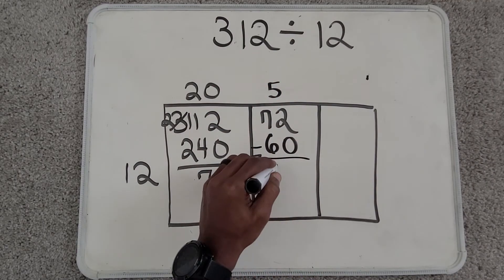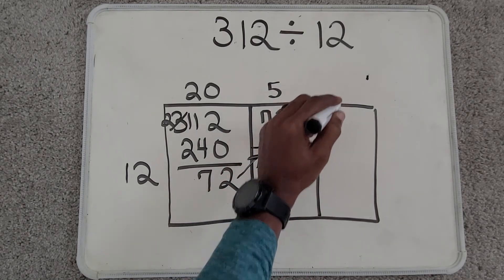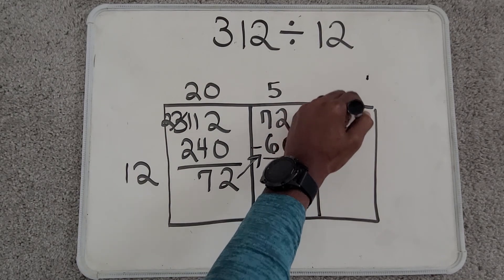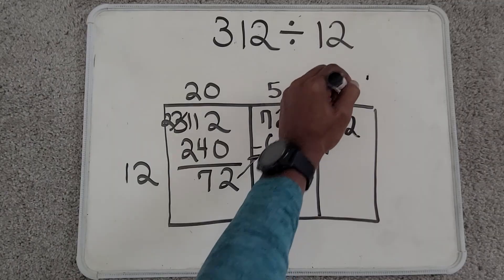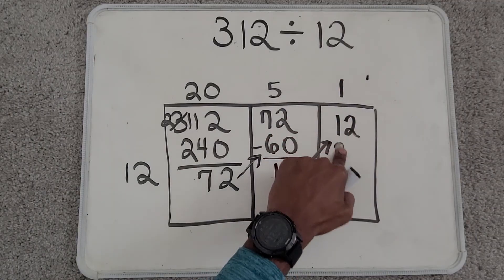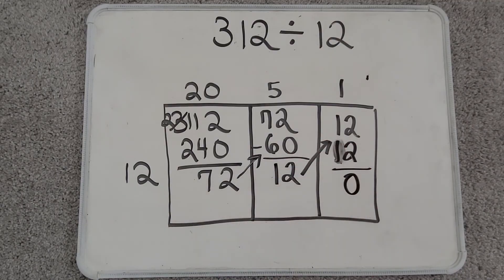That leaves me with 12. I take that 12, that remaining part of the dividend. And I know that 12 times 1 gives me 12. I subtract. That leaves me with a remainder of 0.